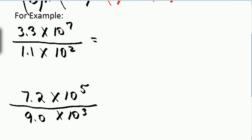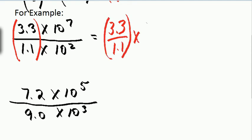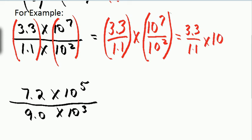Let's apply that to some numbers. For example, if I have 3.3 times 10 to the 7 divided by 1.1 times 10 to the 2, I can group my 3.3 divided by 1.1, all times 10 to the 7 divided by 10 squared. When I divide powers, I subtract their exponents, so 10 to the 7 minus 2. I get 3.3 divided by 1.1 equals 3.0, times 10 to the 7 minus 2, which is 5.